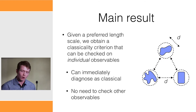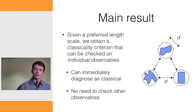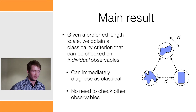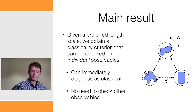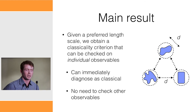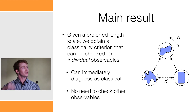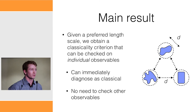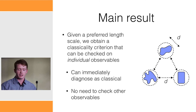Given only a preferred length scale — which you might take from the correlations found in a wave function — you can obtain a classicality criterion that can be checked on individual observables. You don't have to check all possible observables; you can just look at one and immediately diagnose classicality.